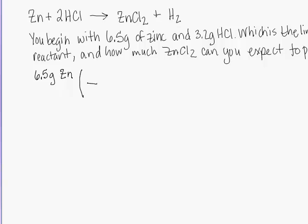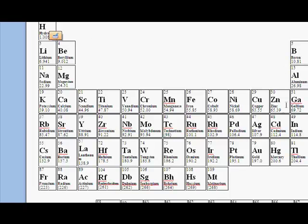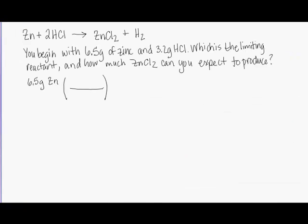So we will go from grams of zinc to moles of zinc, from moles of zinc to moles of zinc chloride, and then from moles of zinc chloride to grams of zinc chloride to find out how many grams we could produce. In order to do this, we'll need the molar mass of zinc. We can look at the periodic table and find that zinc, element 30, has a molar mass of 65.39. So that we can cancel our units, we put 65.39 grams of zinc on the bottom and one mole of zinc on the top.